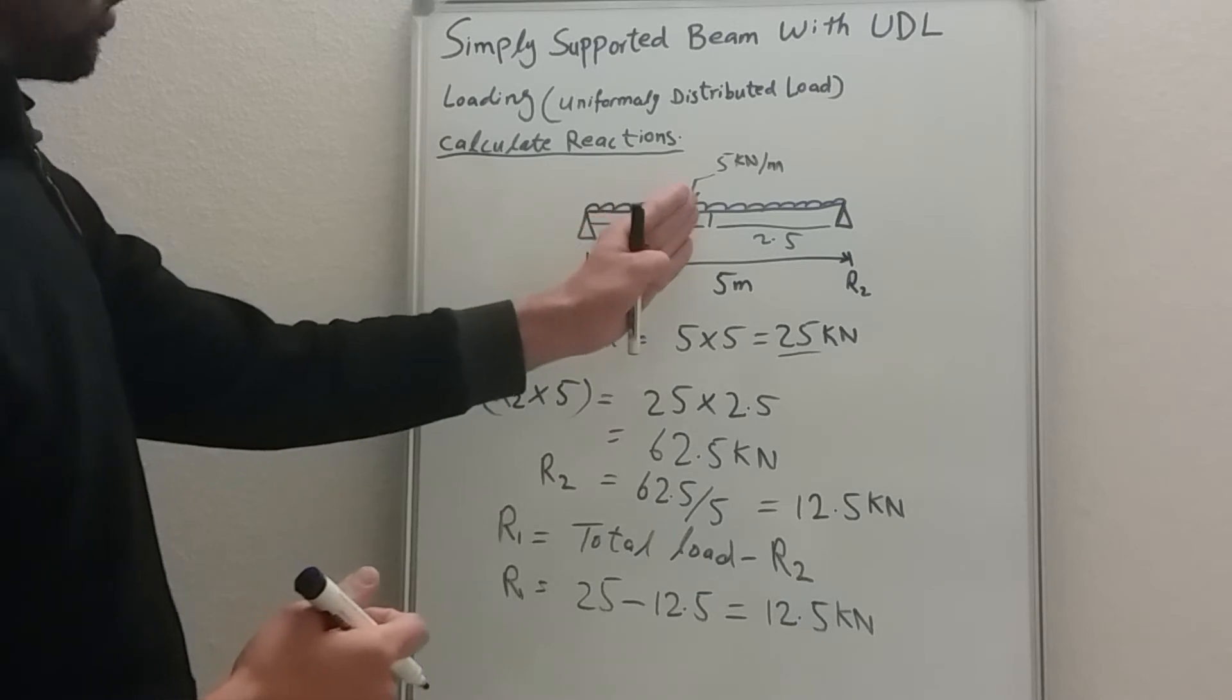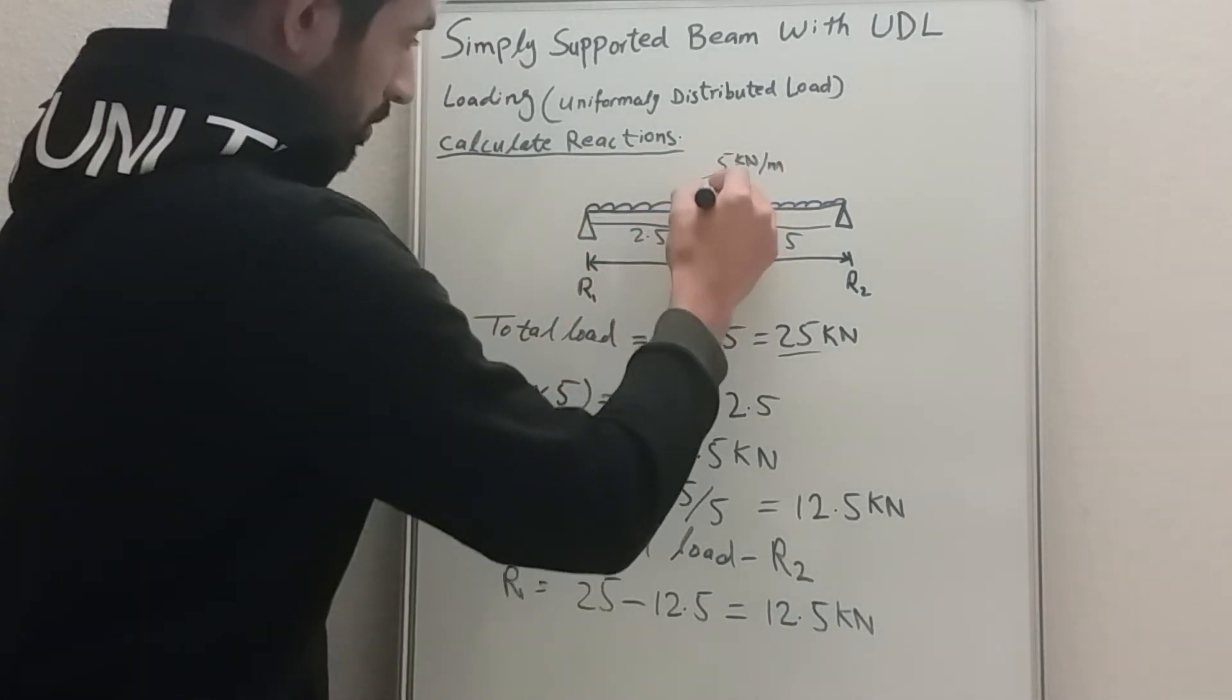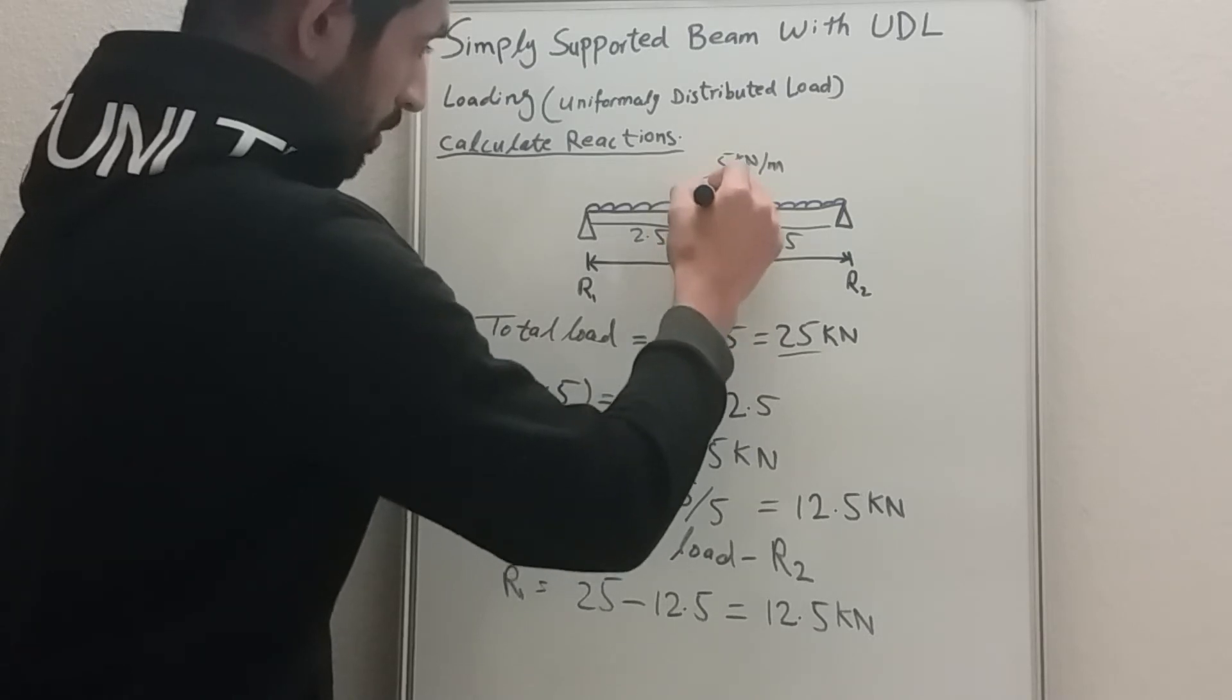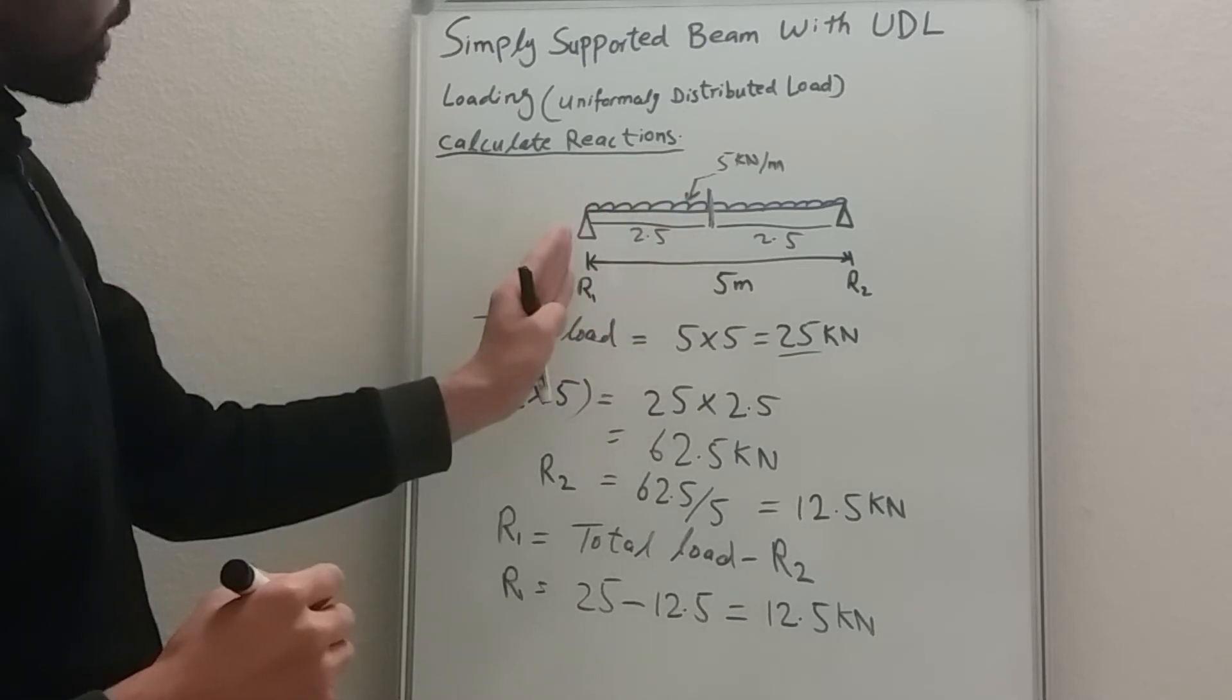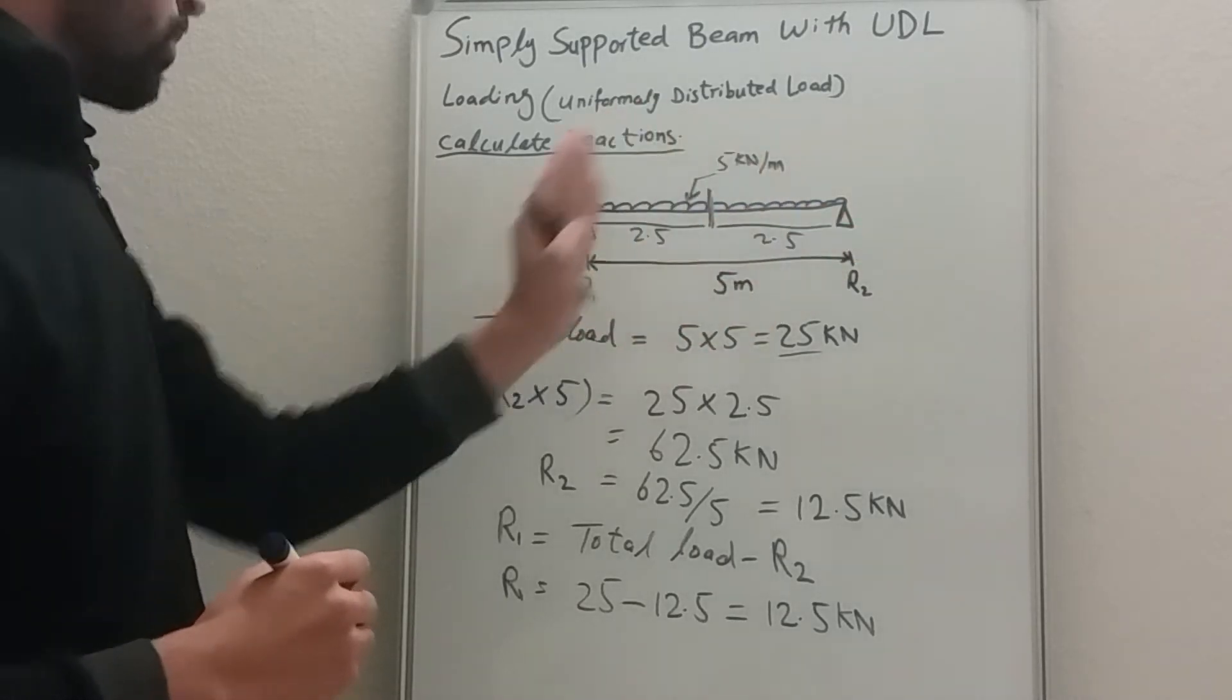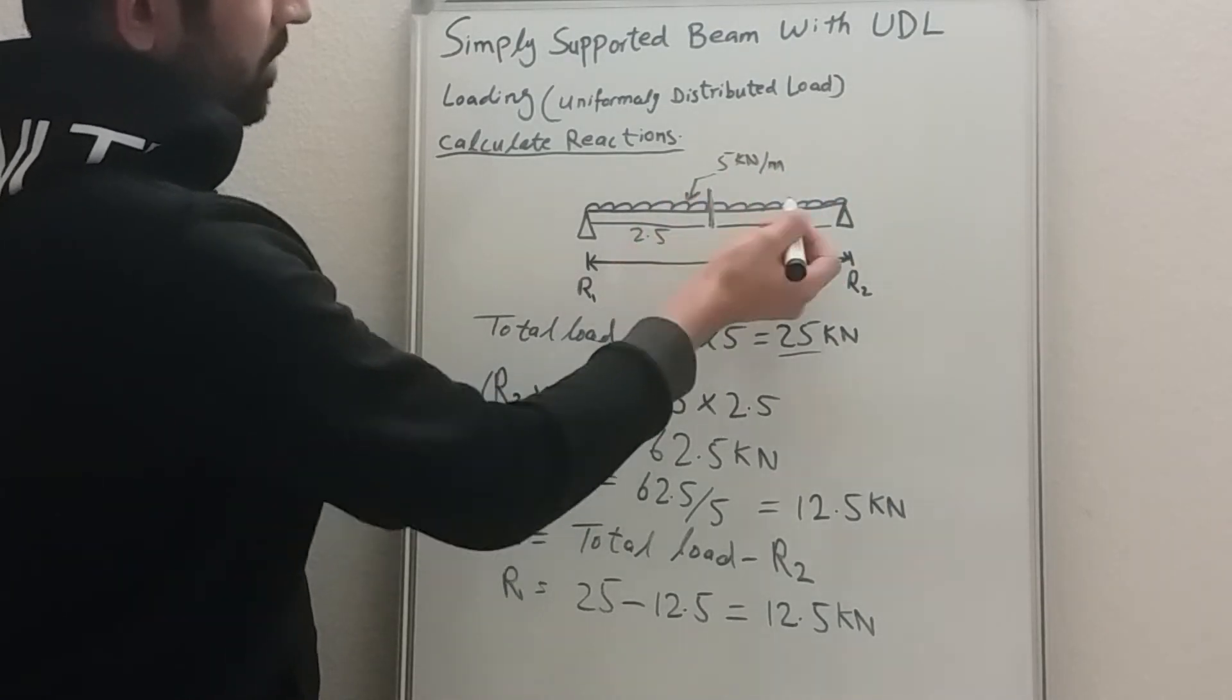You can say the load from right side and the left side, if you cut through in the middle, if you cut the beam in the middle, you have 2.5 meters from the right side and 2.5 meters from the left side. And the rate of loading is the same from right to left.